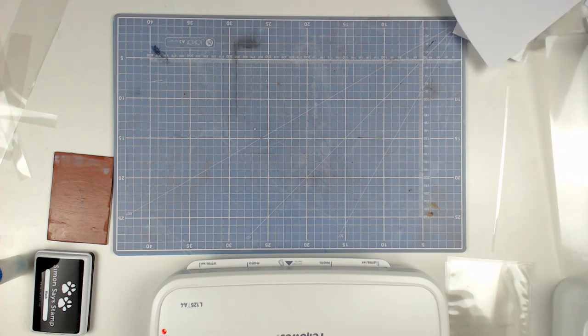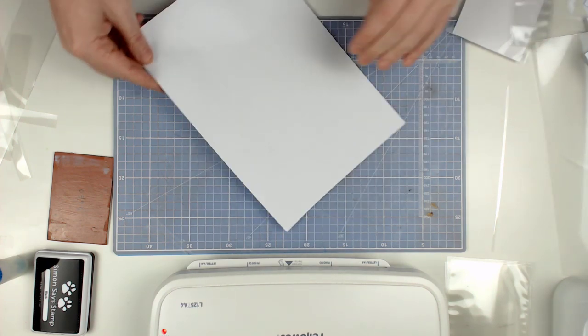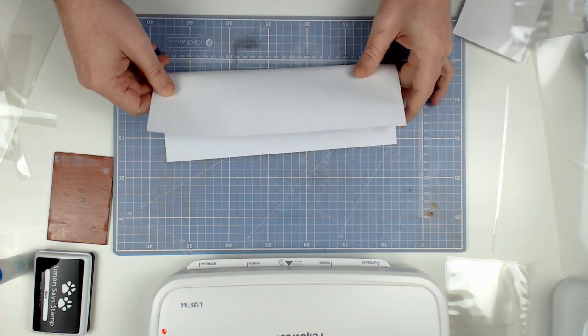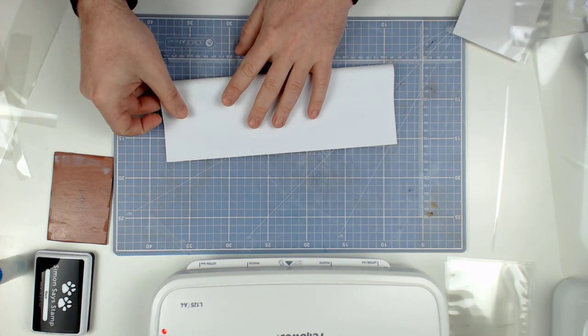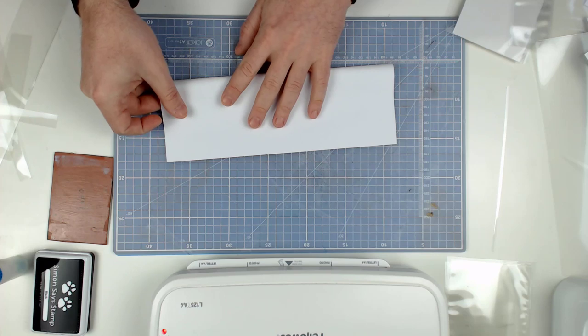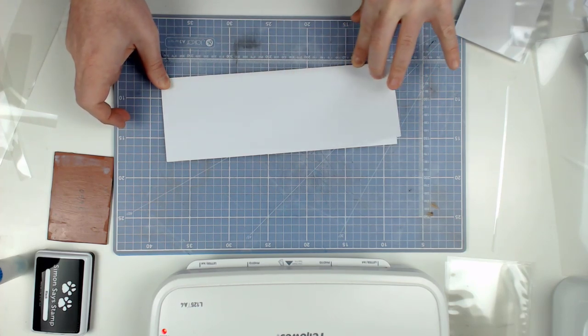Okay. Next up I will show you how to make the insert. What I did is I took an A4 sheet, folded it in half, and then in half again.